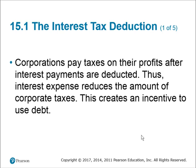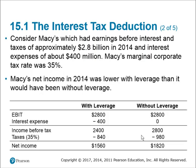Now, what about taxes? Once we incorporate taxes, we know that corporations obviously pay them, and interest is a before-tax deduction. So interest expense reduces taxes, which creates an incentive to use debt. Here we have a company that has $2.8 billion in earnings before interest and taxes, interest expense possibly of $400 million, and a marginal corporate tax rate of 35%. So how would this impact net income?